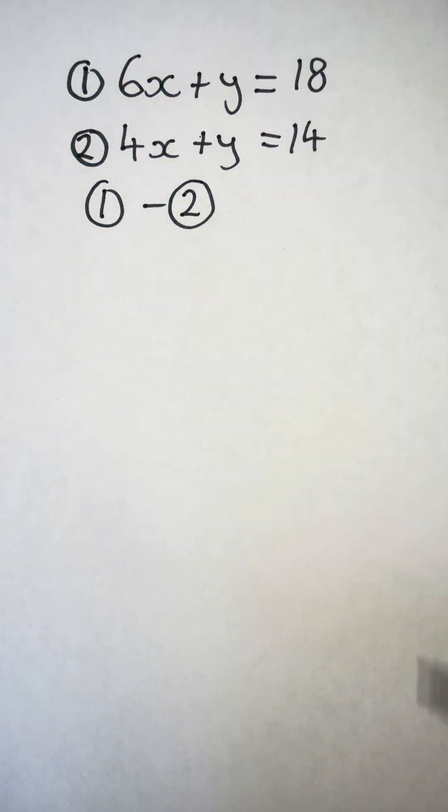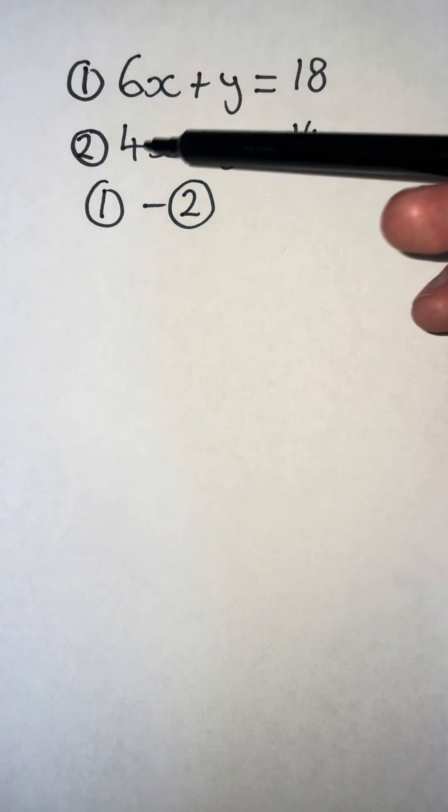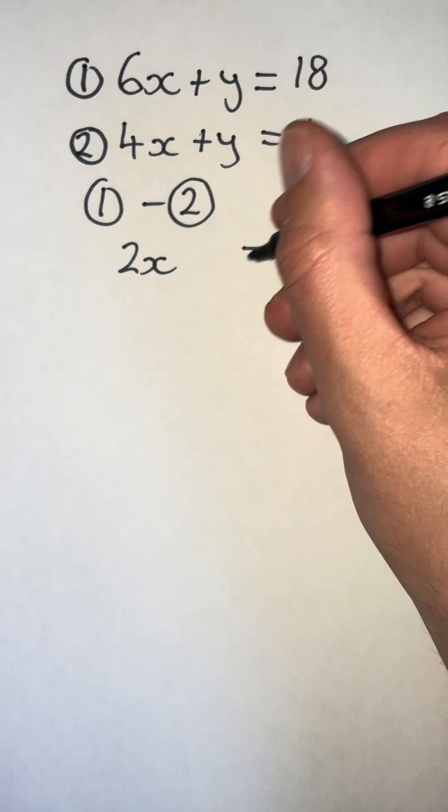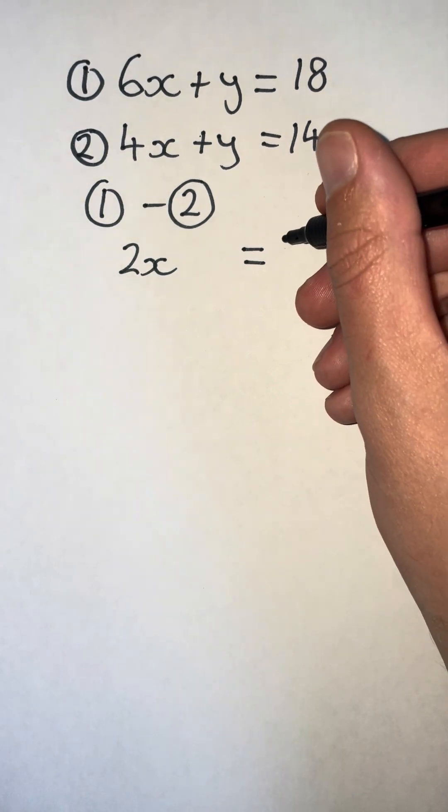This will eliminate my y. 6x minus 4x is 2x, y minus y is 0, and 18 minus 14 is 4.